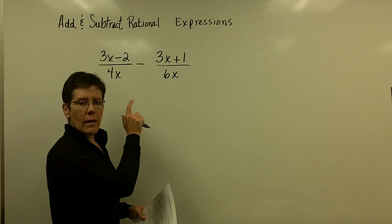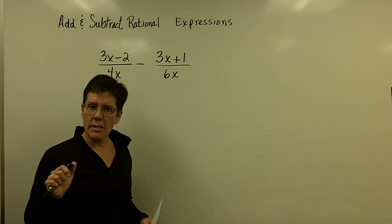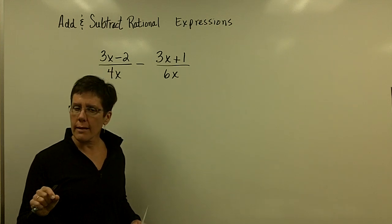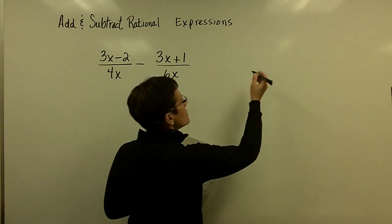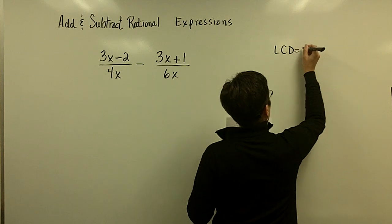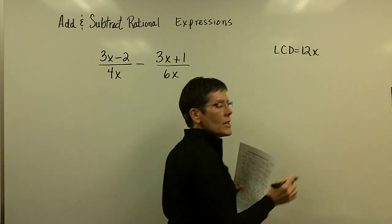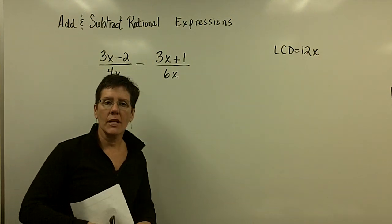But this one's not too bad. The two denominators, what's the common denominator between a 4 and a 6? That's all you have to ask yourself. It's a 12, right? So, I need to get a common denominator of 12, and it's got to have an x in it, because both of these denominators have an x.